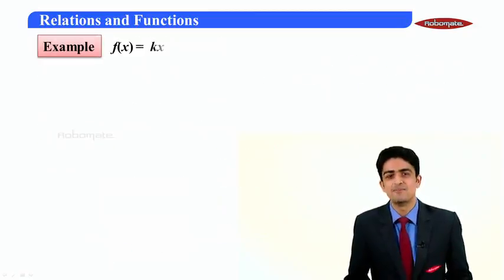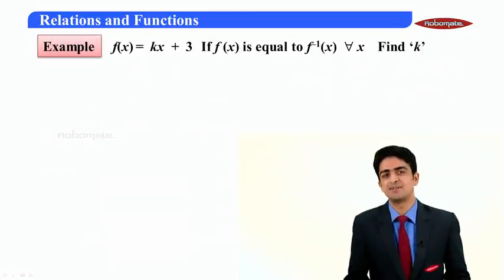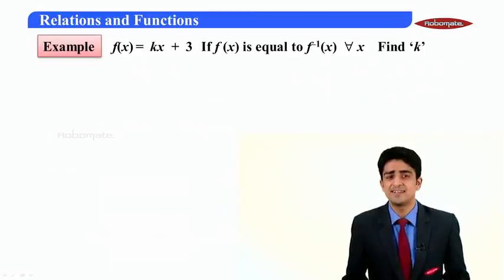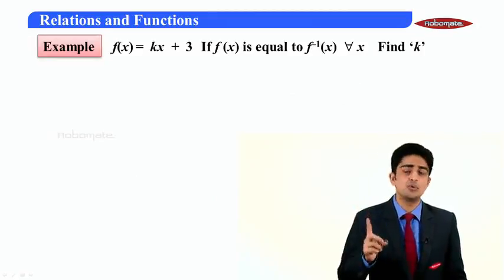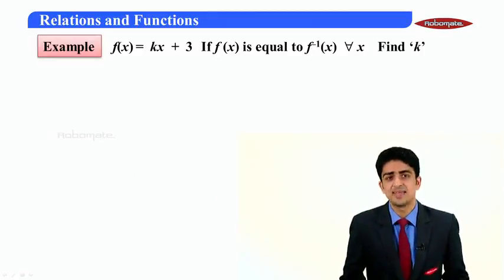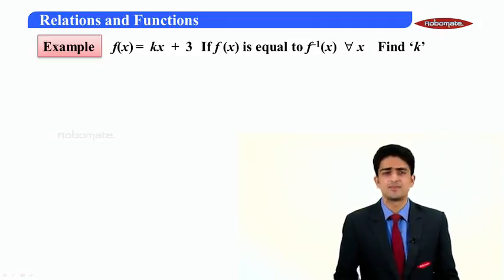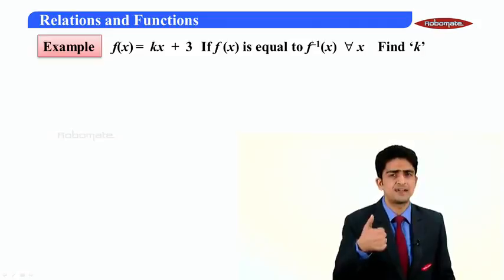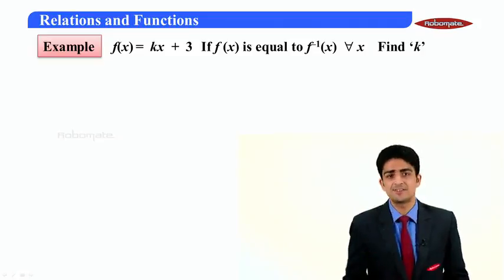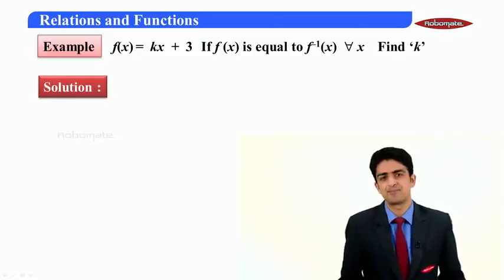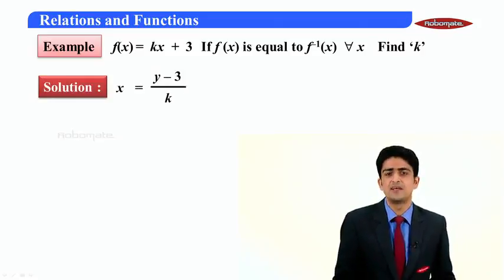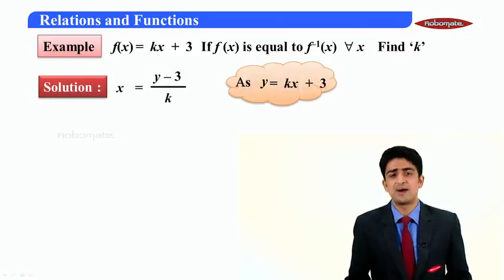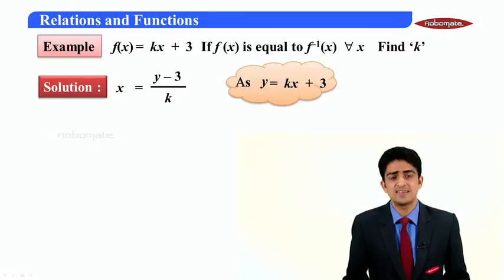Moving ahead we have this example. We are given that f(x) is equal to its inverse and f(x) is kx+3, we got to find k. Simple, we'll first find inverse and then equate it to f(x) to find k. Now for finding inverse we'll express x in terms of y. As y is kx+3, x will be (y-3)/k.